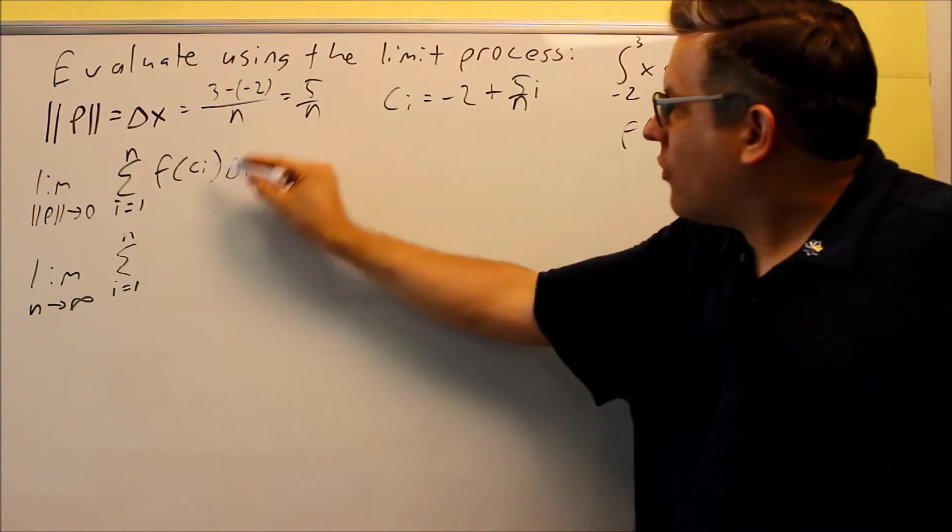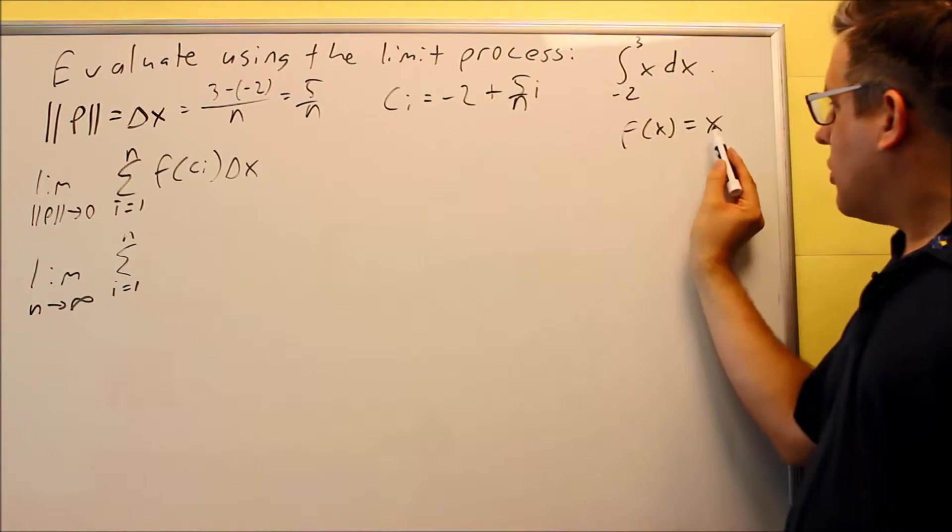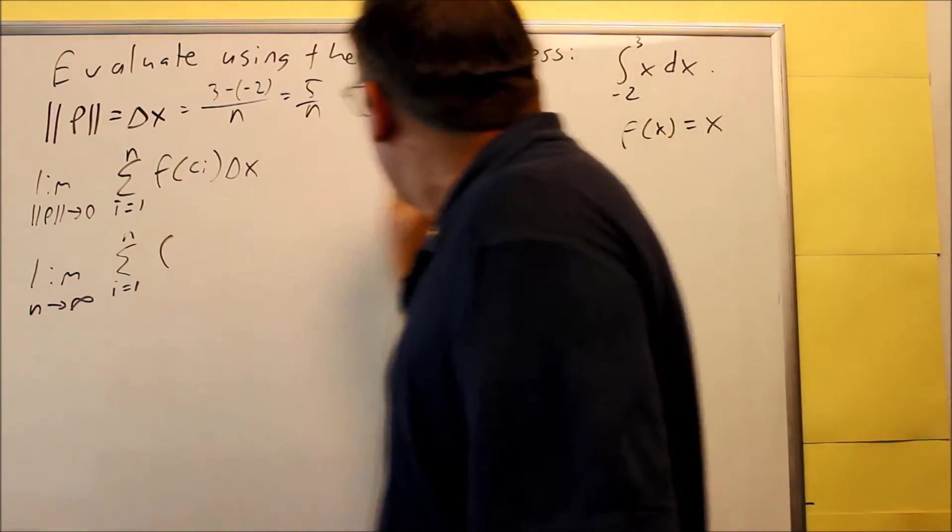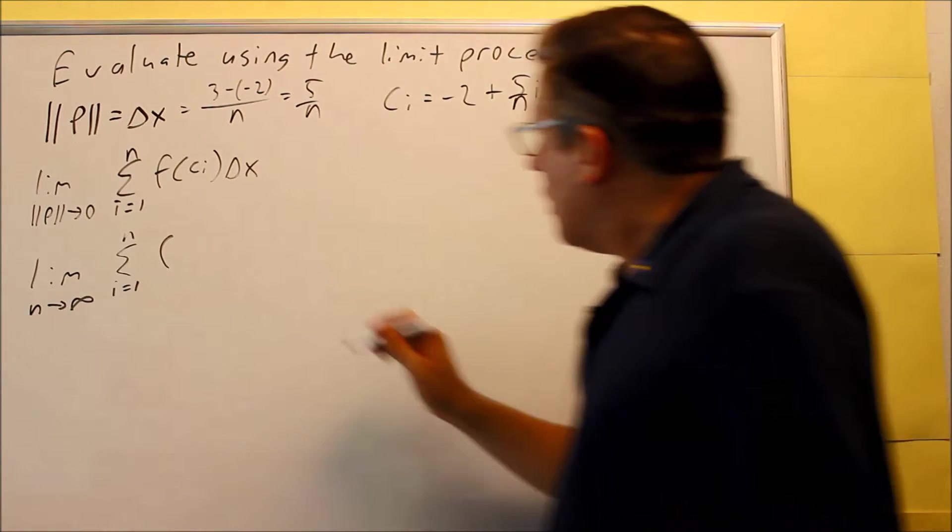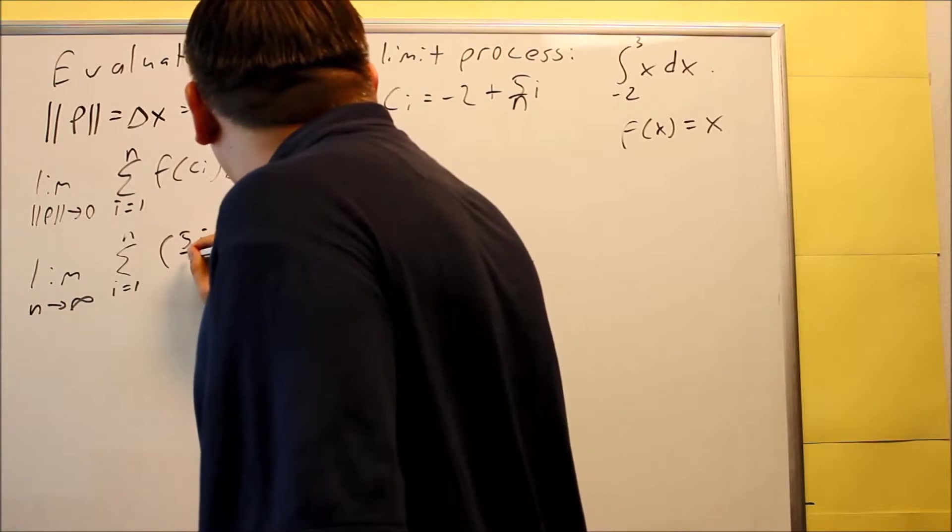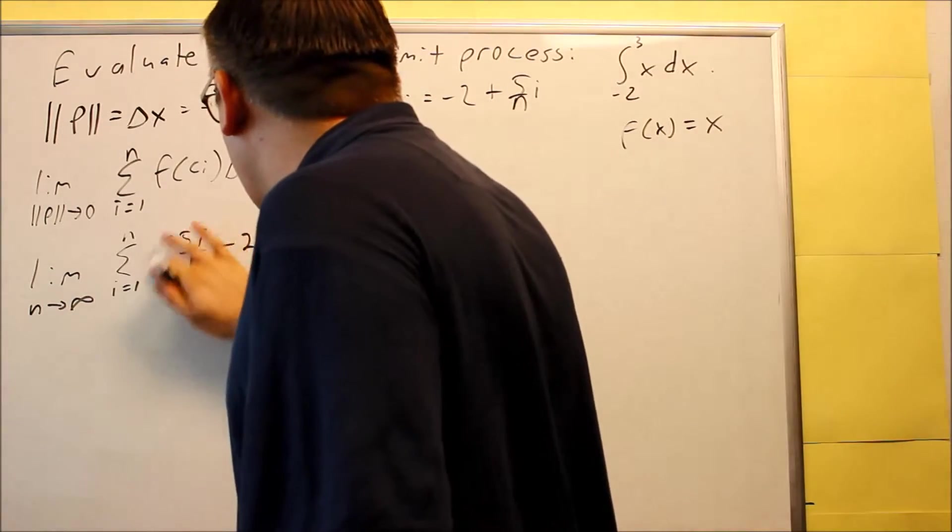I can basically say that my f of x equals x in this case. So, if I want to find f of ci, I'm basically putting all this in just for x. So, when I do that, I'll get the same thing as a result. So, I'm going to do 5i over n minus 2, just reverse that.